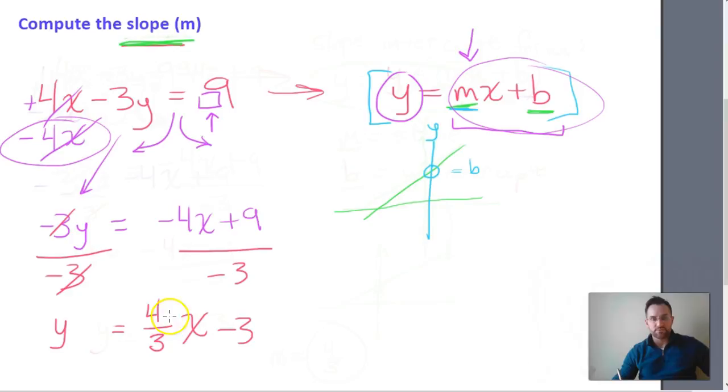So positive 4 thirds x minus 3 is equal to y. So now we see that slope-intercept form that we see up here. It is of the form y equals m times x plus b.